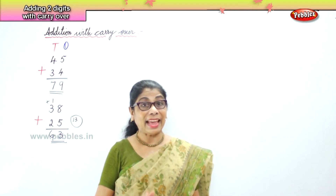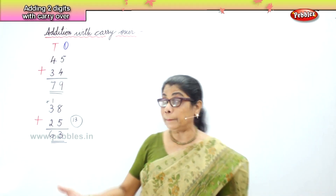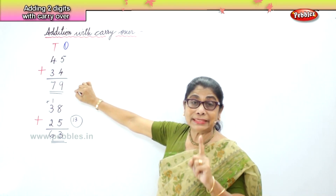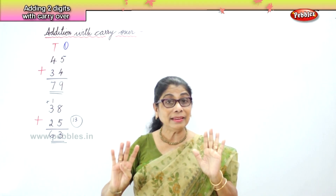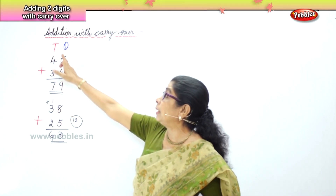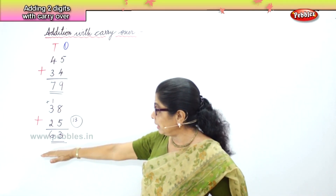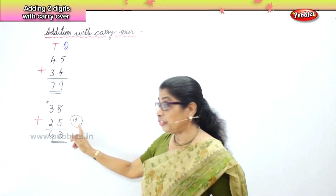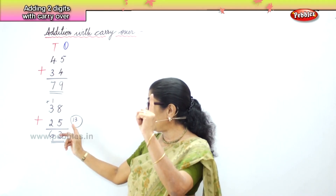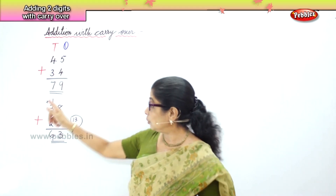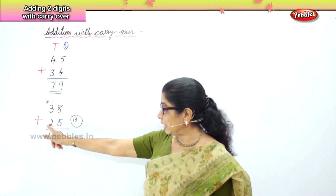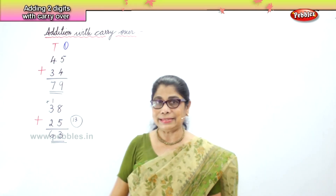In carrying over, all we need to remember is: in the ones place, you can only put numbers up to nine — single digits. When it becomes ten, then it becomes one ten. That's what happened here: eight plus five is thirteen, that's one ten and three ones. We put the three ones in the ones place, carry over the one ten to the tens place, then add three tens plus one ten makes four tens, four tens plus two tens makes six tens.